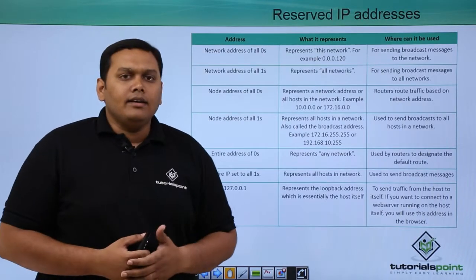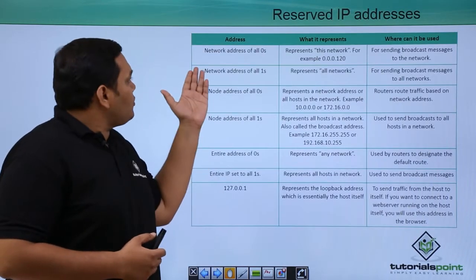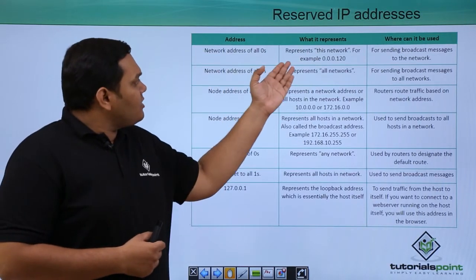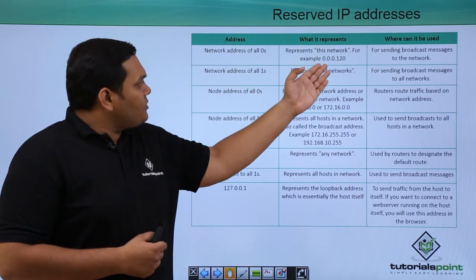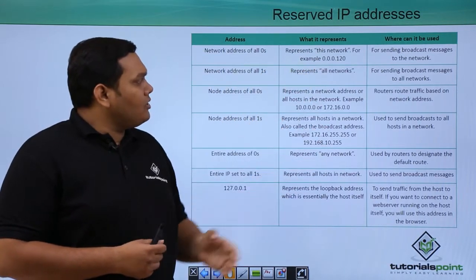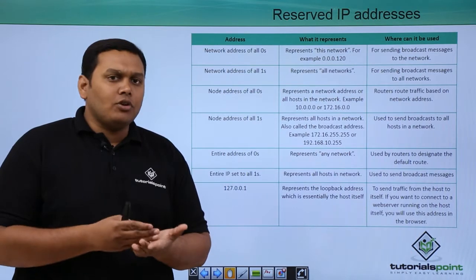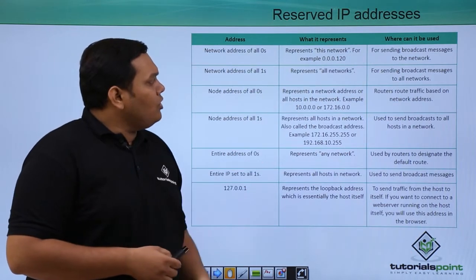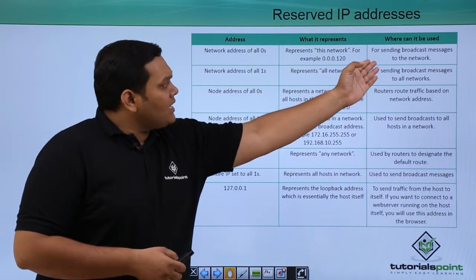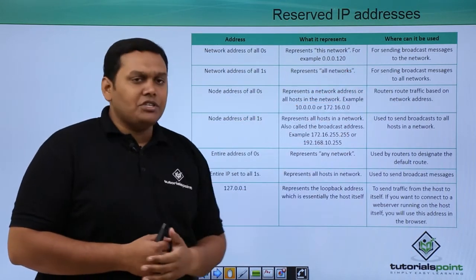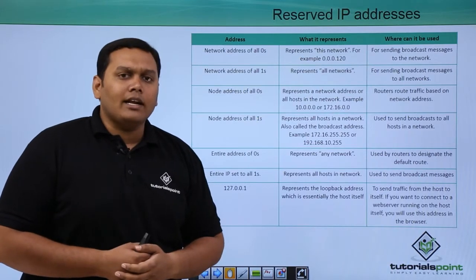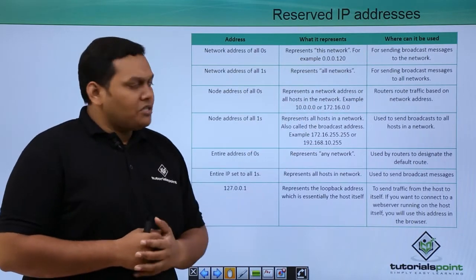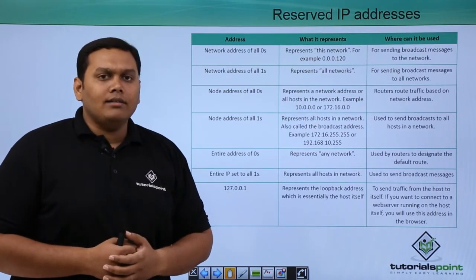Looking at this table, the network address of all zeros represents 'this network.' For example, 0.0.0.120. It is used for sending broadcast messages to the current network.